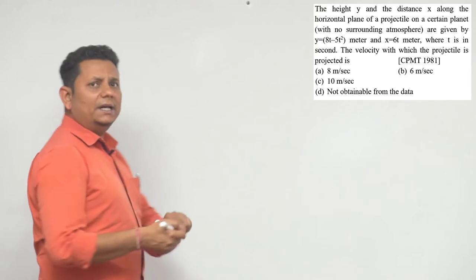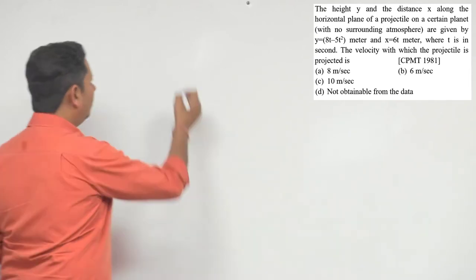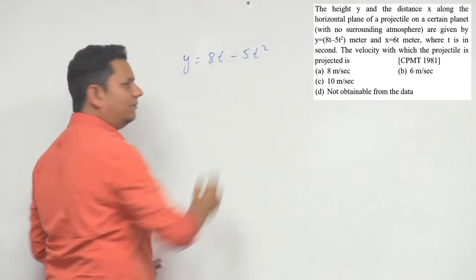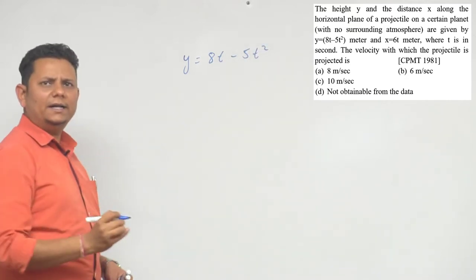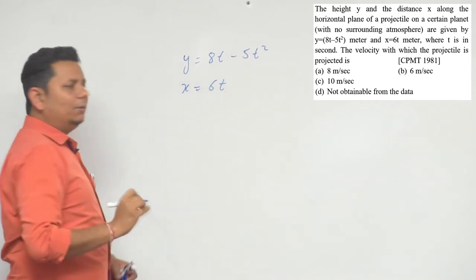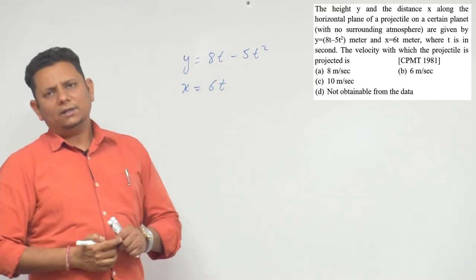If we look at this question carefully, the data given is y equals 8t minus 5t square and x equals 6t. We have to find the velocity at the launch. This is a simple question if we differentiate it.